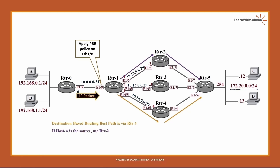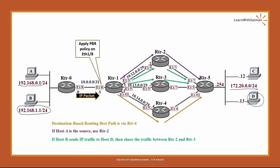We need to apply PBR on interface 1/8 with these criteria: if host A is the source, regardless of the destination, use router 2 as the next hop. Another condition: if host B sends traffic to host D, share the traffic between router 2 and router 3. So if the source is 192.168.1.1 and destination is 172.20.0.13, traffic must be load-shared between router 2 and router 3. Without this policy, all traffic uses router 4 as the next hop. I configured host A and B on router 0 as loopback interfaces.